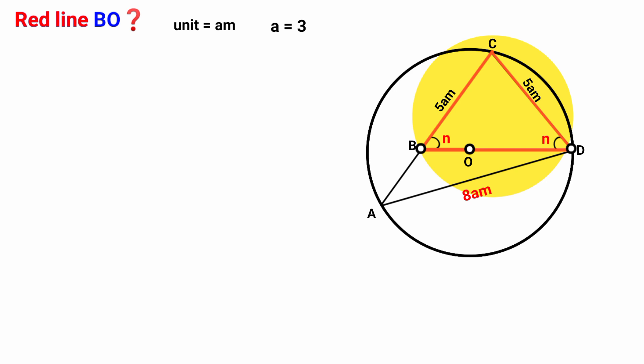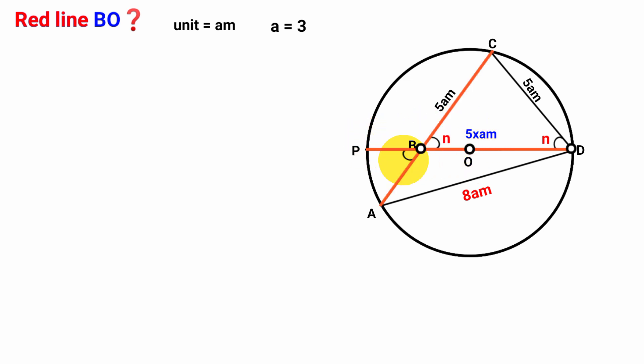Now let's assume the length of this side to be 5XA meters. Don't forget A meters is the assumed unit, so it is a constant. Now in this line, let's extend it until it touches the circumference. Call this point P. Now look at this angle ADP and this angle N — they are both formed by two straight lines intersecting. That is, they are vertically opposite angles. So since this is N, this must also be N.